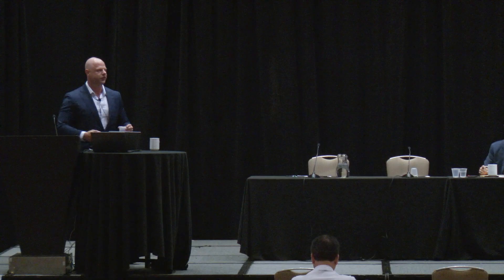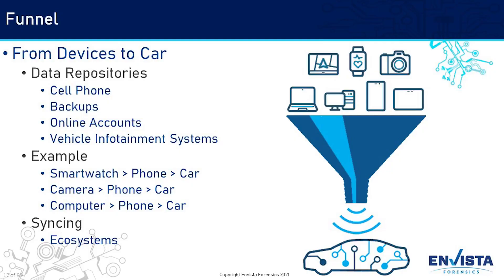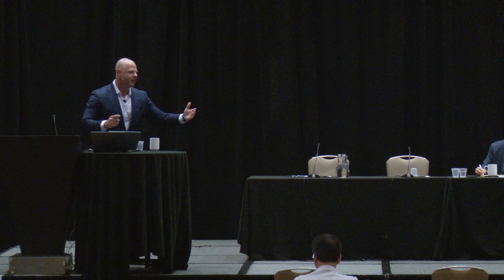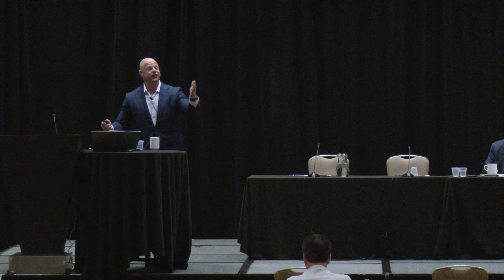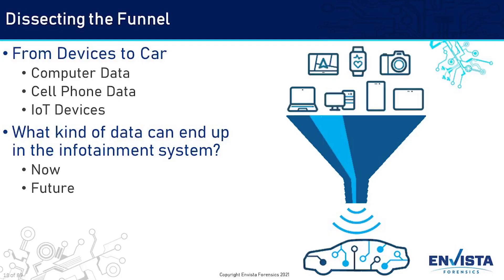How does that evidence get on the infotainment system? Think of it like a funnel. Your car pulls from data repositories — whether that's a phone, backups, online accounts, or your computer. Something from your smartwatch transmits data to your phone, then your phone connects to the car and transmits that data to the car. Any technological path from point A to point X, it can do that. Your watch is just a fancy sensor — it dumps data to your phone, which has processing power and storage capacity, and your phone connects to the car, which pulls that data down. Computer data, cell phone data, and IoT devices are the primary sources of user-generated data going to a car.